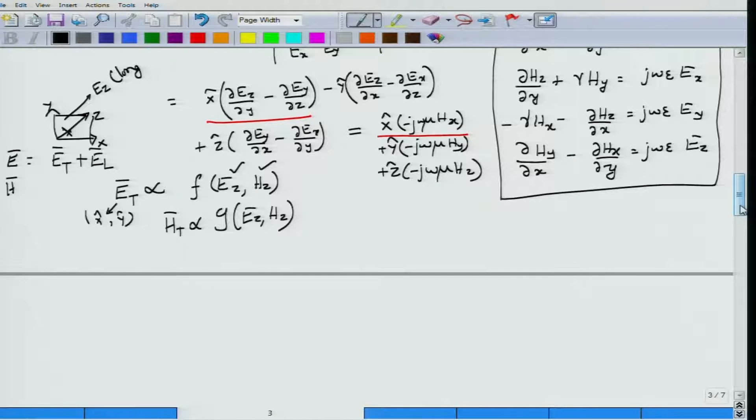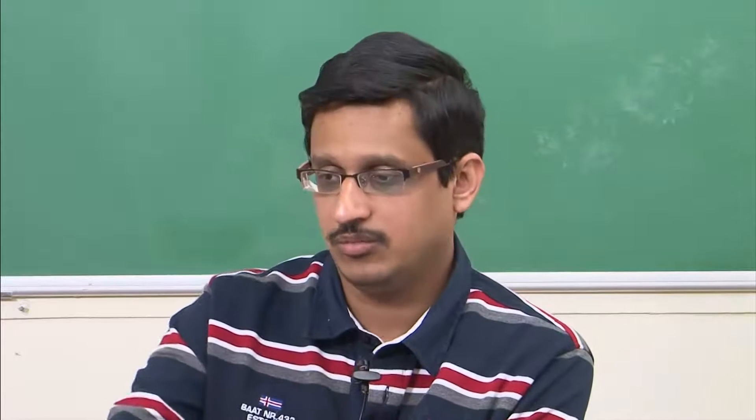For a TE mode there is no component of the electric field along the longitudinal direction, so Ez equals zero. You are left to solve only for Hz and use that to obtain the transverse electric and magnetic field components.